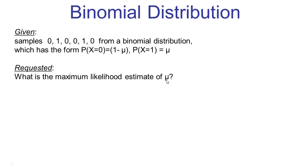In this first exercise, we are given a set of samples 0, 1, 0, 0, 1, 0 from a binomial distribution. This distribution has the following form: the probability of x being 0 is 1 minus mu, and the probability of x being 1 is mu. We are asked for the maximum likelihood estimate of the parameter mu.